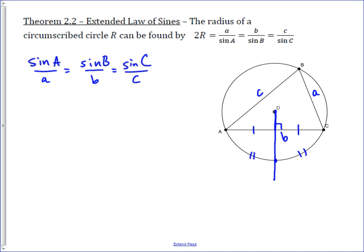So, if I call this point E here, arc AE is going to be congruent to arc EC, and so arc AE is just going to be half of arc AC.